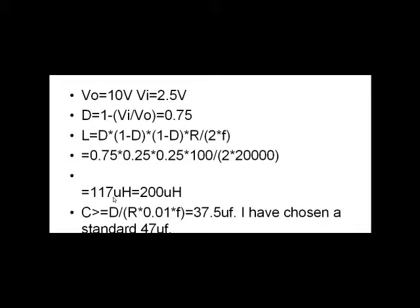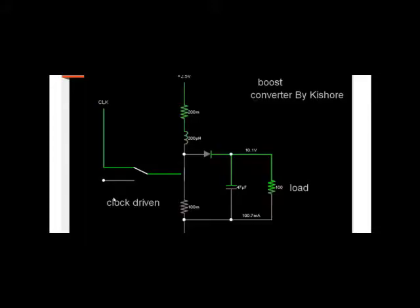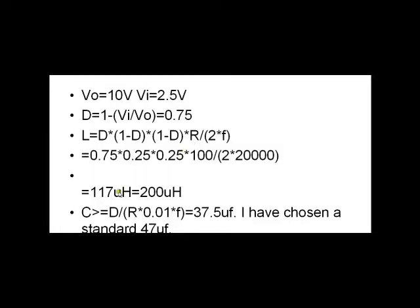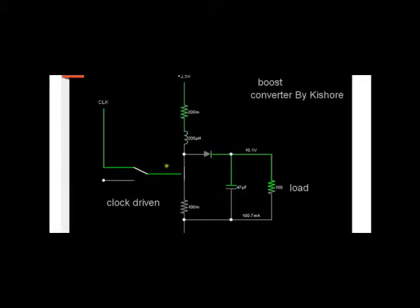Usually in designing a boost converter, we choose the value of L greater than the calculated minimum value. So if we choose 200 microhenry, we can be sure that the inductor current will never be zero during operation. Because if the inductor current becomes zero in any part of the cycle, then this boost converter will be in discontinuous mode — and we do not want it to be in discontinuous mode.